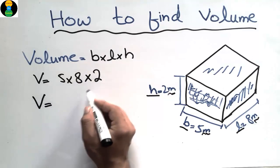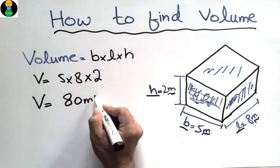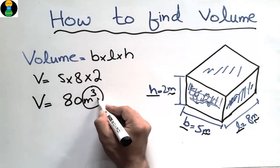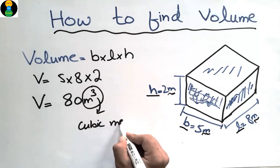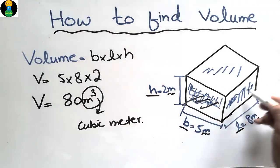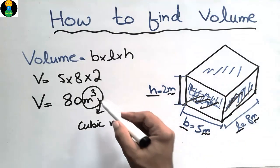Now the volume is equal to, if you multiply these three quantities, it comes out to be 80 cubic meters. The volume should always be in the unit of cubic, cubic meters, because it includes the three dimensions of any object.